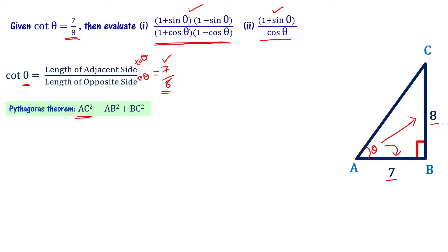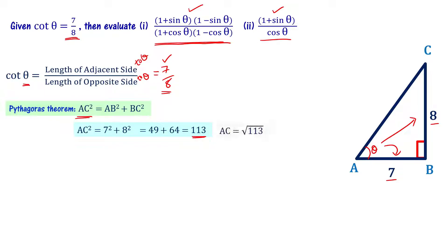Substituting AB and BC values: AC square equals 7 square plus 8 square, which is 49 plus 64, equals 113. So AC square is 113, meaning AC equals square root of 113.